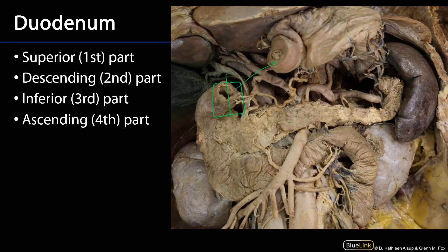In the second part, the duodenum moves to be retroperitoneal — specifically secondarily retroperitoneal — because it is pulled behind the peritoneum during development. The first part or superior portion of the duodenum is very identifiable from the remaining parts by its mucosa because it is rather smooth-walled. The remainder of the mucosa within the duodenum will have circular folds, which slow the movement of material and increase surface area for absorption.